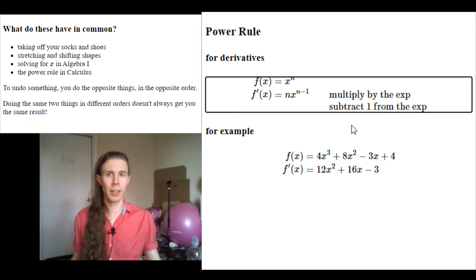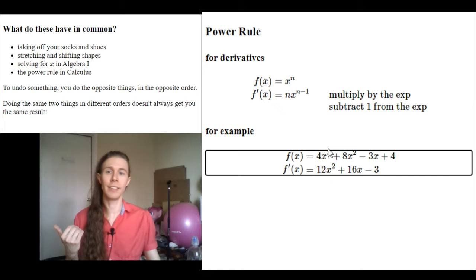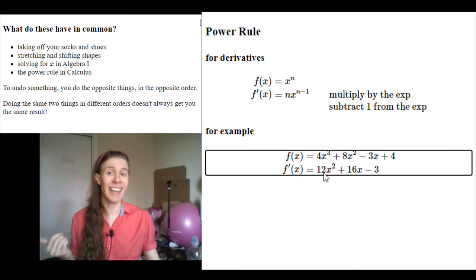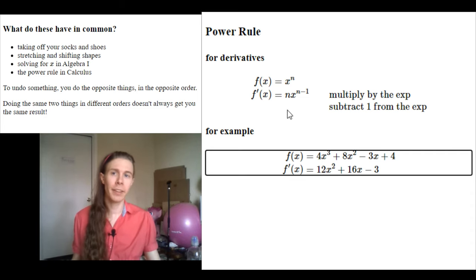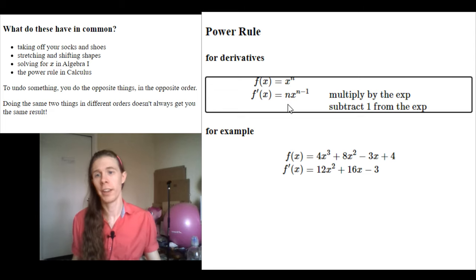Just to be clear, we can check real fast if it's actually even necessary to do them in the opposite order by checking if doing the two things we have normally in the other order gets us something different. And sure enough, if instead we subtracted 1 from the exponent before we multiplied by the exponent, then instead of multiplying by n, we'd be multiplying by n minus 1. For example, down here, if instead of multiplying by 3 and getting 12, and then subtracting 1 and getting 2, if we subtracted first and got 2, then multiplied by that 2, we get 4 times 2 is 8, and our answer would be smaller.